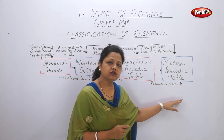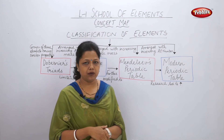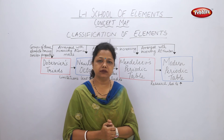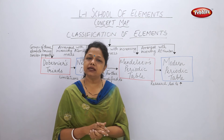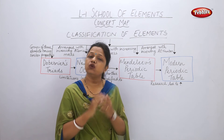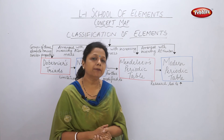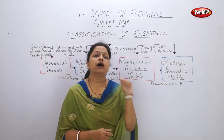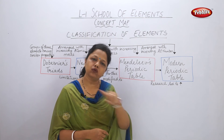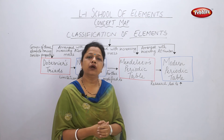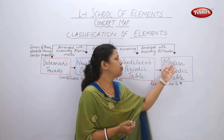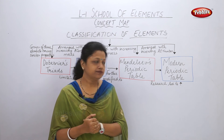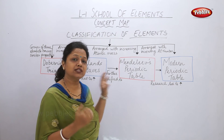Those limitations led to the formation of the modern periodic table, which we use today. The scientist who made this modern periodic table made one key change — he said the fundamental property of an element is not atomic mass but atomic number. He rearranged all elements in increasing order of atomic numbers in rows and columns to create the modern periodic table, also known as the long form of the periodic table.